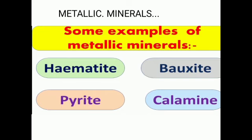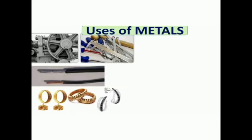Let us see some uses of metals. Iron is used for making machines and tools, vehicles, bridges, etc. Copper and aluminium are used for making electrical wires. Gold and silver are precious metals used to make jewellery. These metals are commonly used for making utensils, machines, furniture, wires, coins, and bodies of trains and aeroplanes. Precious metals like gold, silver and platinum are used for making jewellery.